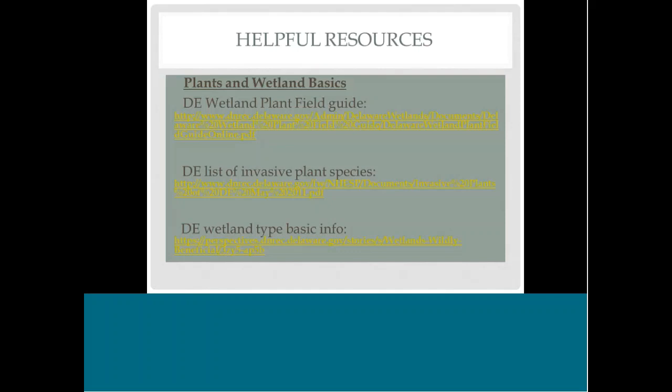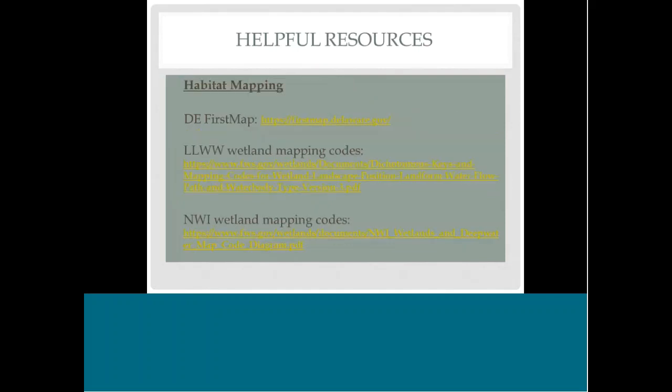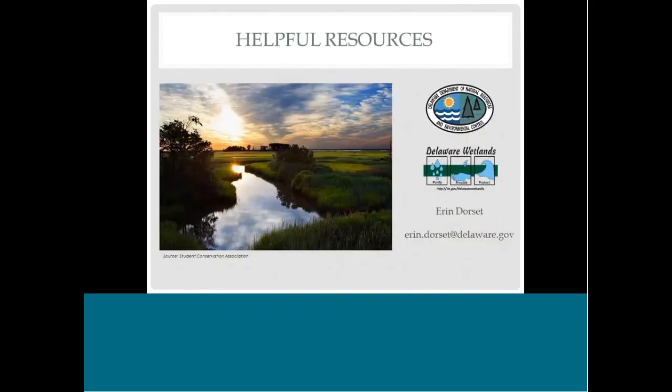To wrap up: there are additional habitat resources available, including information about different plants, a list of invasive plant species, more wetland type information, and links for habitat mapping using GIS. Using GIS can be really helpful to characterize your habitat as an initial guide before you actually visit the site in the field.